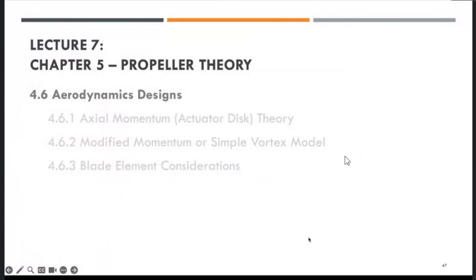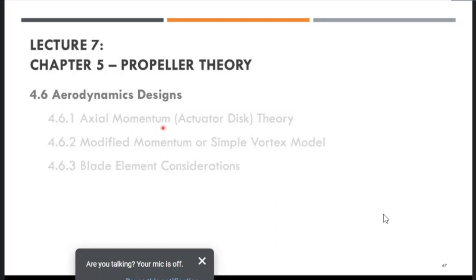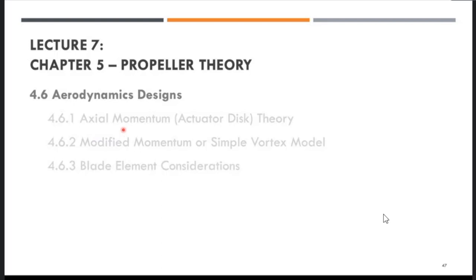To continue our remaining 40 to 50 minutes lecture, we are going to look into the aspect of aerodynamic design of the propeller. Earlier in the propeller theory lecture I showed some examples of how the blades are being twisted and have different types of airfoil. In order to understand the reasoning behind propeller design, we will look into axial momentum actuator disc theory, then the modified momentum or simple vortex model, before ending with blade element considerations.